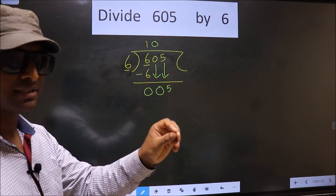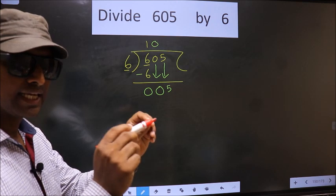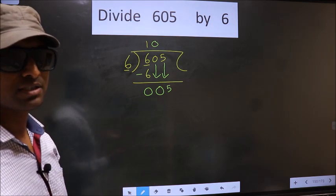Bringing the numbers down and putting a dot and taking 0, both at the same step, you are not supposed to do.